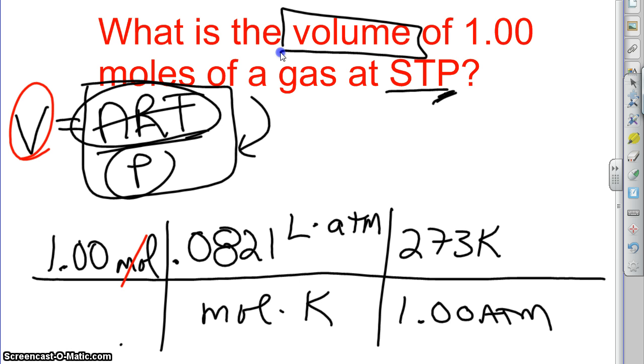So I see mole on top and bottom. Those cancel. I see atmosphere on bottom and top. Those cancel. And I see liter on top, but there's no liter on the bottom, which means that liter does not cancel. So when I work this out, when I plug through the formula here, I'm going to get an answer of liters.